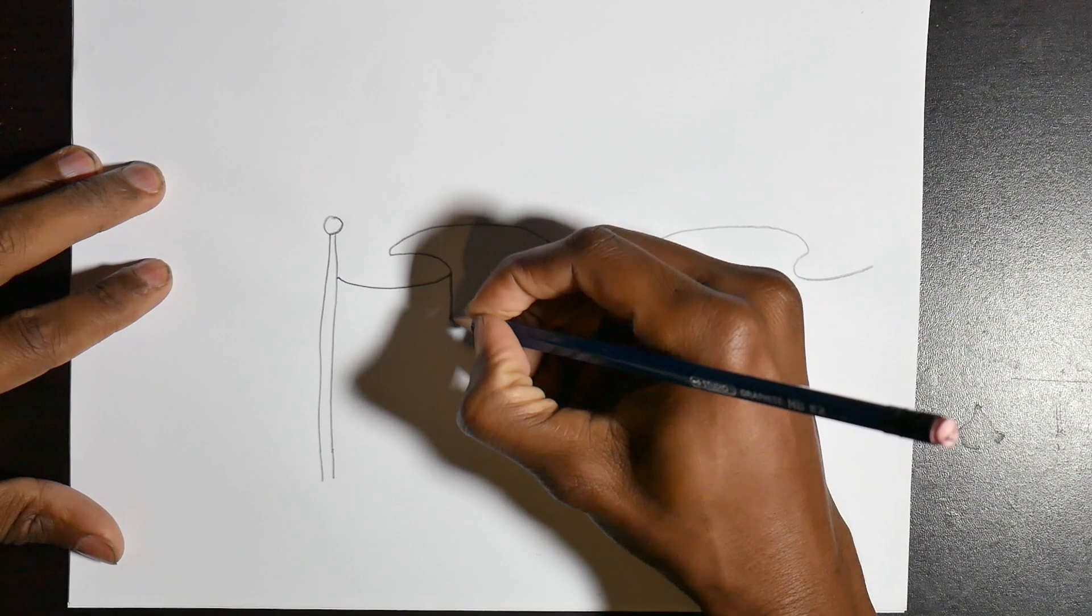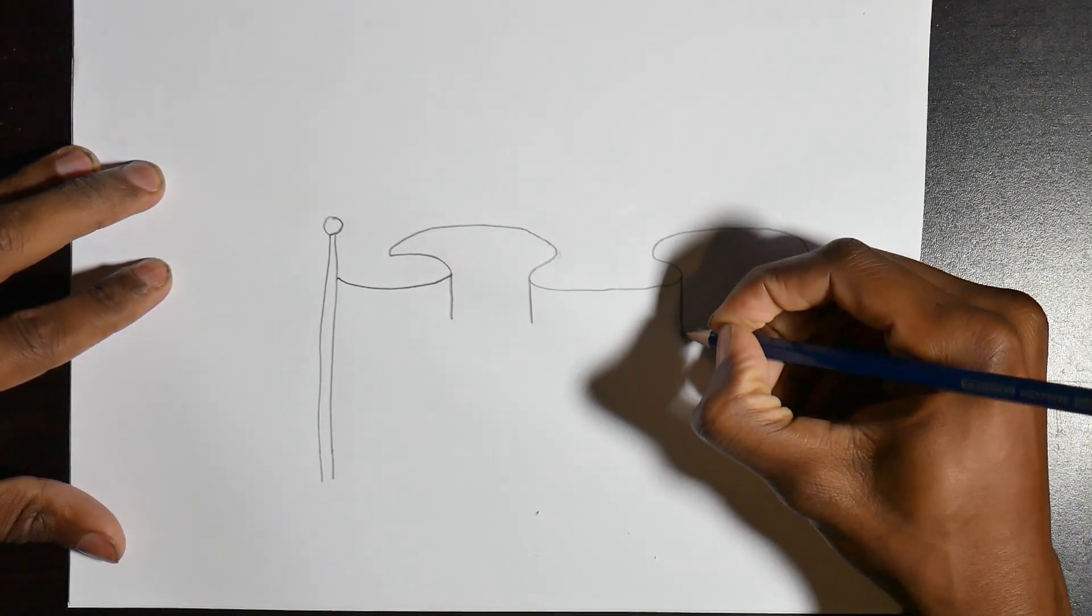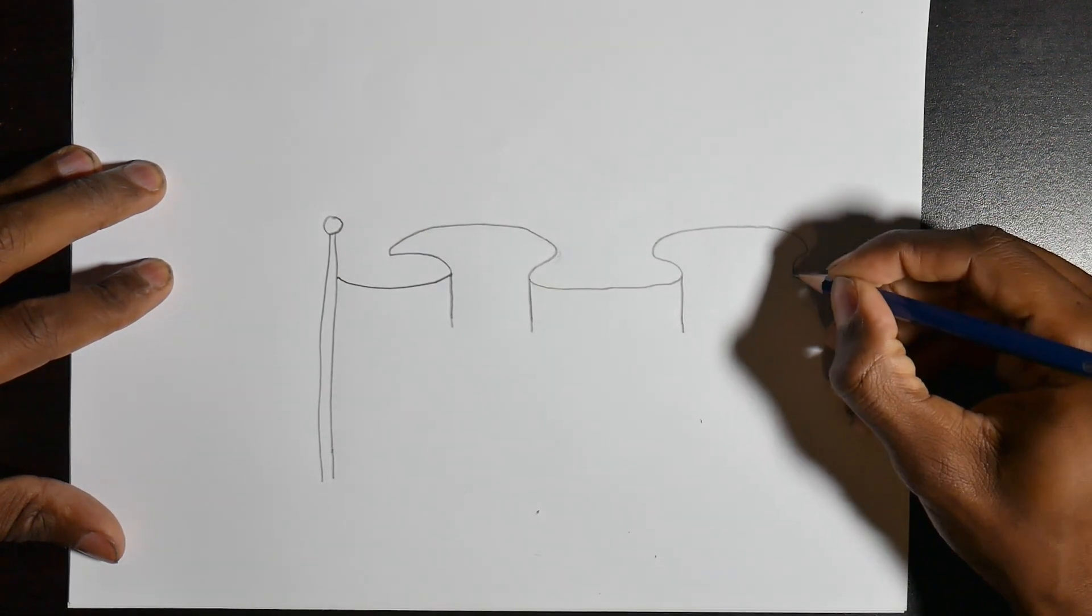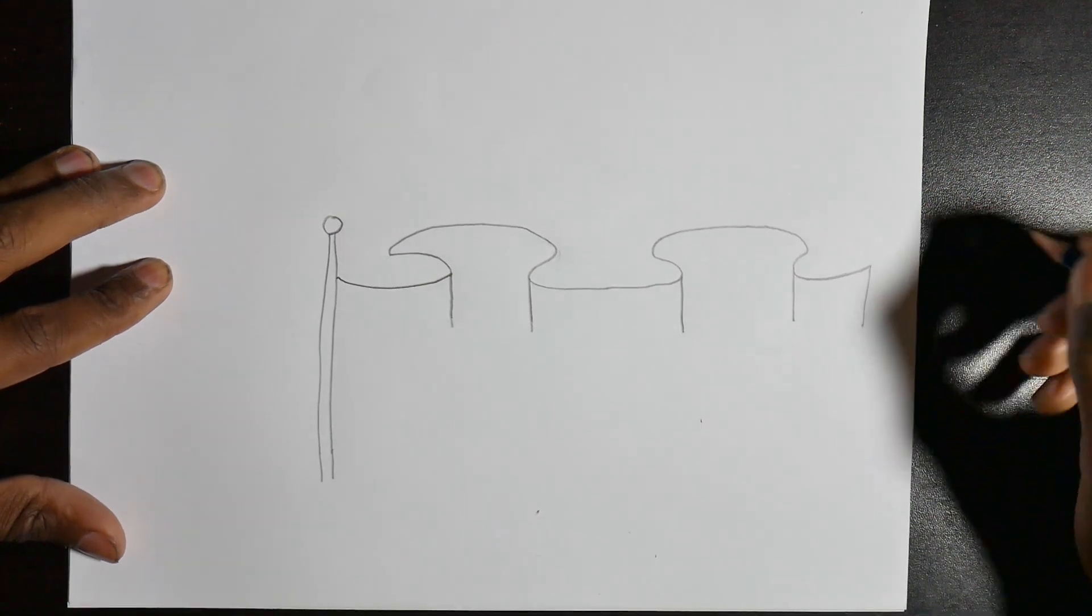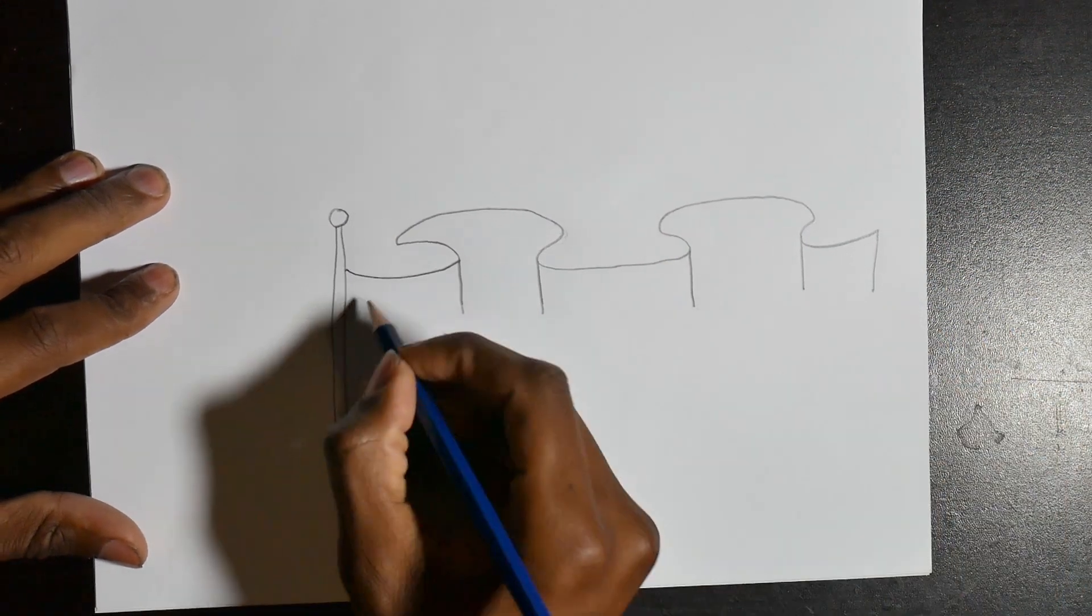Alright, so now we're going to add the thickness lines to our flag going down. Next, let's add the bottoms. Try to curve these more than the line above it.